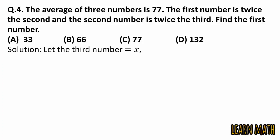Let the third number is X, so the second number is twice, so second number is equal to 2X. And the first number is twice the second, so the first number is equal to 4X.